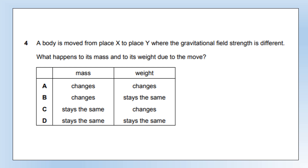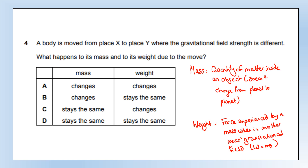A body is moved from place X to place Y where the gravitational field strength is different. What happens to its mass and weight? Mass is the quantity of matter inside an object — essentially how many atoms it's made from. Moving it from X to Y doesn't change the number of atoms, so mass stays the same. Weight is the force experienced by a mass in a gravitational field, calculated as mass times gravitational field strength. If the gravitational field strength changes, the weight changes. So we eliminate A and B (mass changes — wrong), and select option C.